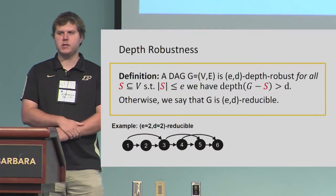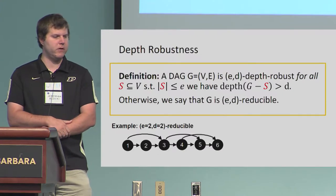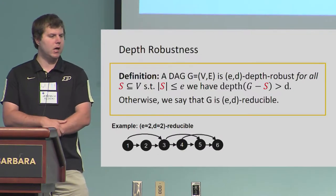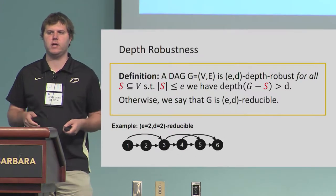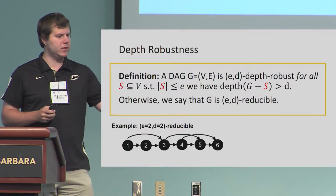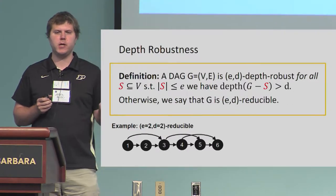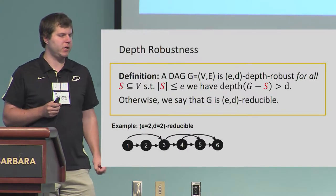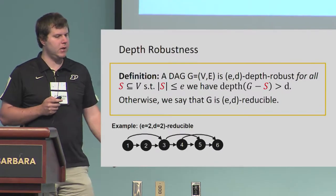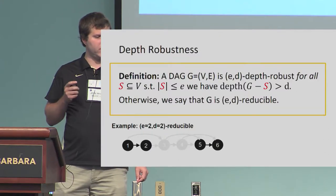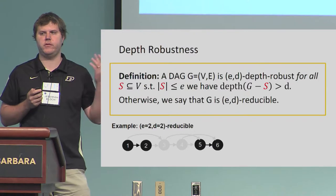Depth-robustness: given a DAG G, we say it's ED-depth-robust if, for all sets of E nodes, deleting those nodes from the graph still leaves a path of length at least D. If a graph doesn't satisfy this property, we say it's ED-reducible. Here's an example of an ED-reducible graph: if we delete these two nodes, the longest remaining path in the graph is 2.